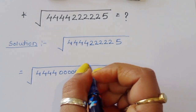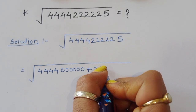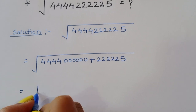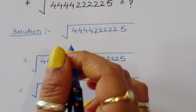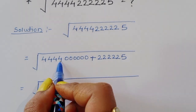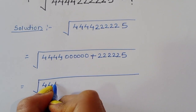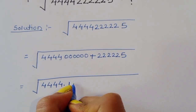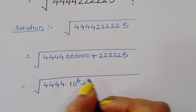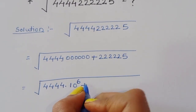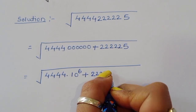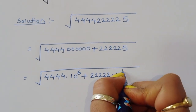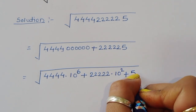Similarly, we write the 5 times 2 term: that is 22222, which is 2 times 11111. So we have 2 times 11111 into 10 raised to 1, plus 5. This gives us our structured equation.